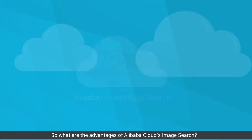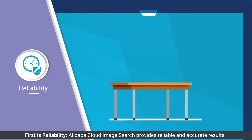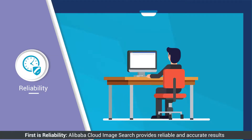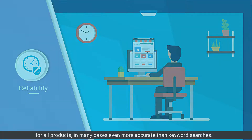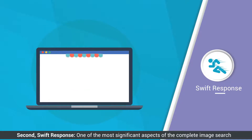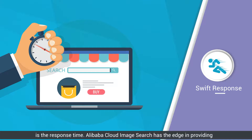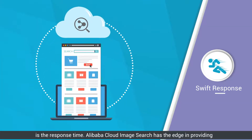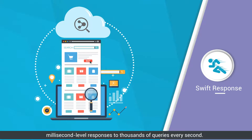So what are the advantages of Alibaba Cloud Image Search? First is reliability — Alibaba Cloud Image Search provides reliable and accurate results for all products, in many cases even more accurate than keyword searches. Second, swift response — one of the most significant aspects of the complete image search process is the response time. Alibaba Cloud Image Search has the edge in providing millisecond-level responses to thousands of queries every second.